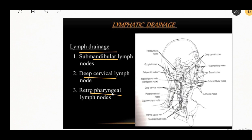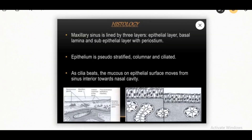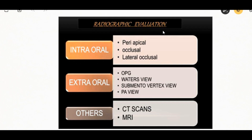The maxillary sinus is lined by three layers: the epithelial layer, basal lamina, and sub-epithelial layer. The epithelium is pseudo-stratified columnar and ciliated epithelium. When the cilia beat, the mucus on the epithelium surface moves from the sinus interior toward the nasal cavity.